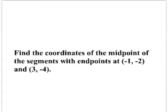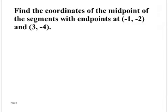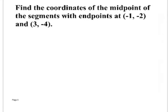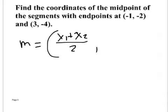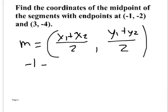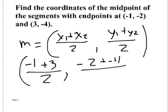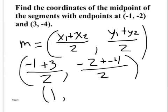Your homework will ask you to find the coordinates of the midpoint of a segment with given endpoints. Using the midpoint formula: x-coordinate is (x1 plus x2) divided by 2, y-coordinate is (y1 plus y2) divided by 2. For points (-1, -2) and (3, -4): x is (-1 plus 3) divided by 2, and y is (-2 plus -4) divided by 2. Negative one plus three is two, divided by two is one.